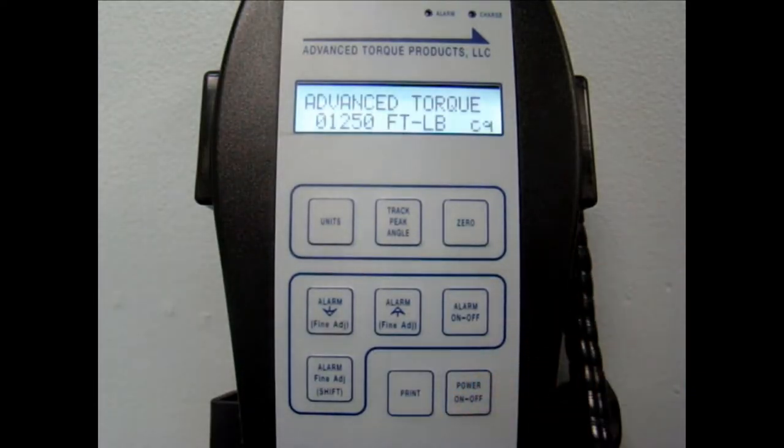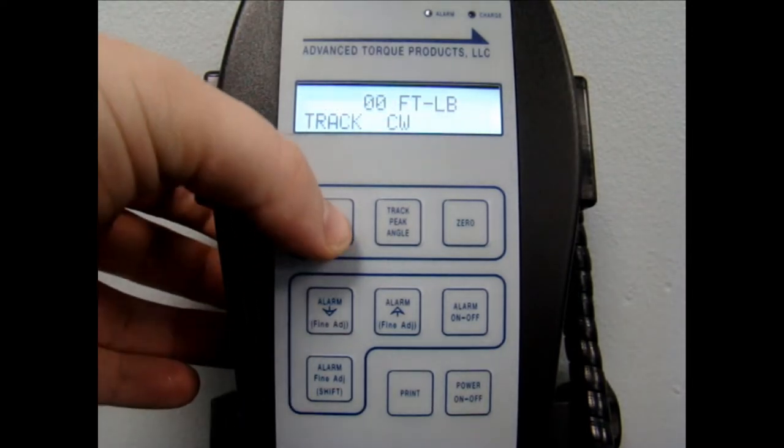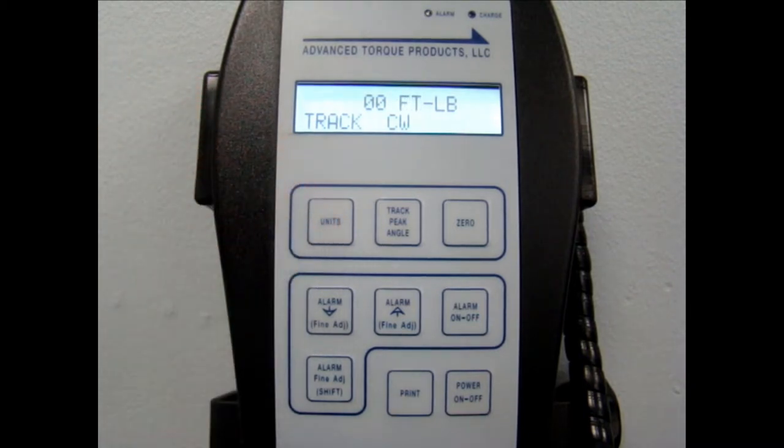Now let's take some time to go over the features and capabilities of the digital display. The units button allows you to toggle through the different units of measure used for torquing. Foot-pounds and inch-pounds are most common, but other scales such as newton meters and custom units can be programmed if desired.